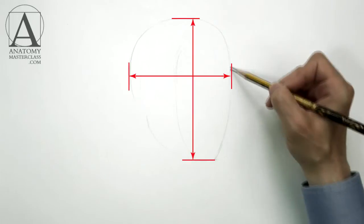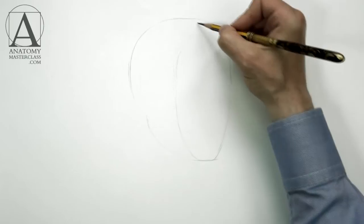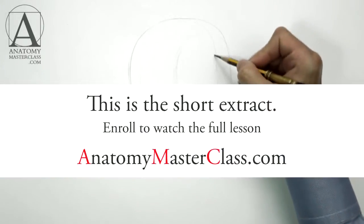The width to height ratio can be first marked in the drawing by eye and then measured on the model by using a pencil as a measuring stick.